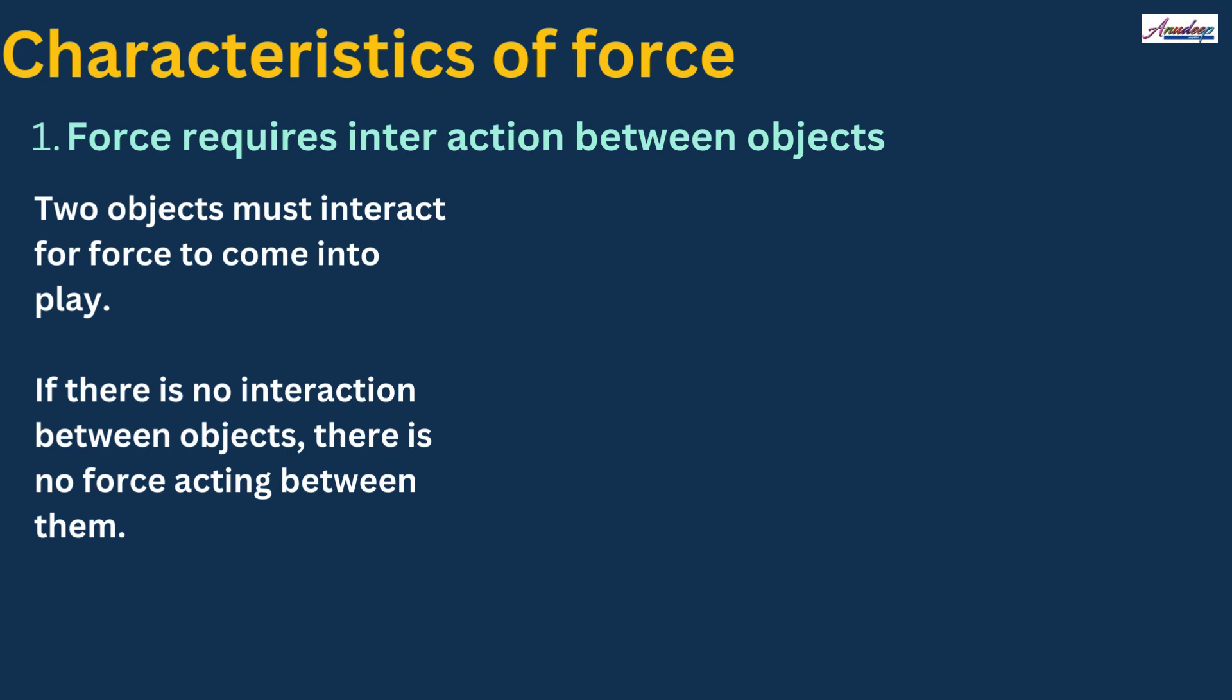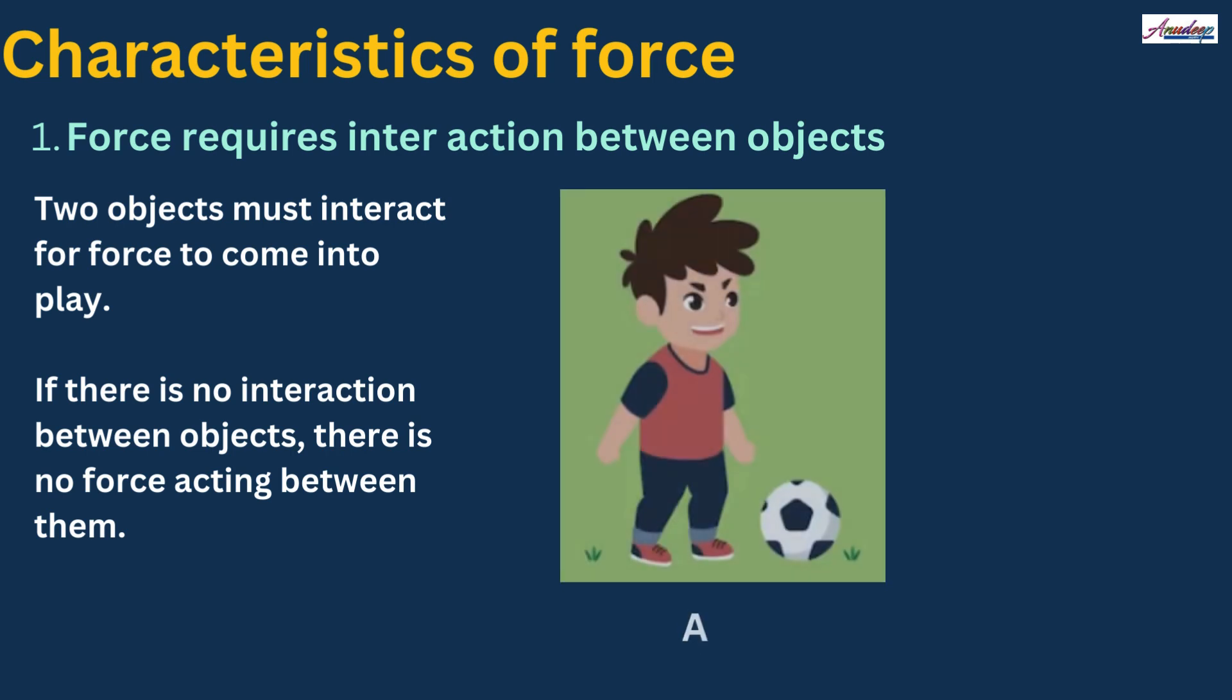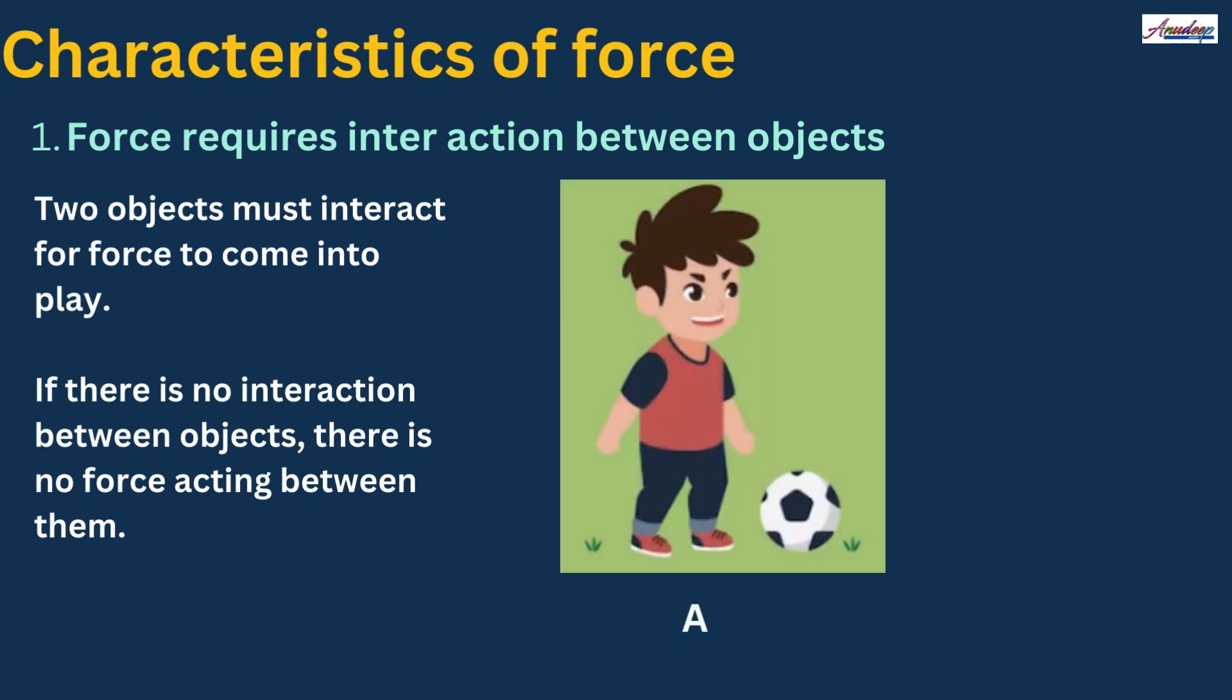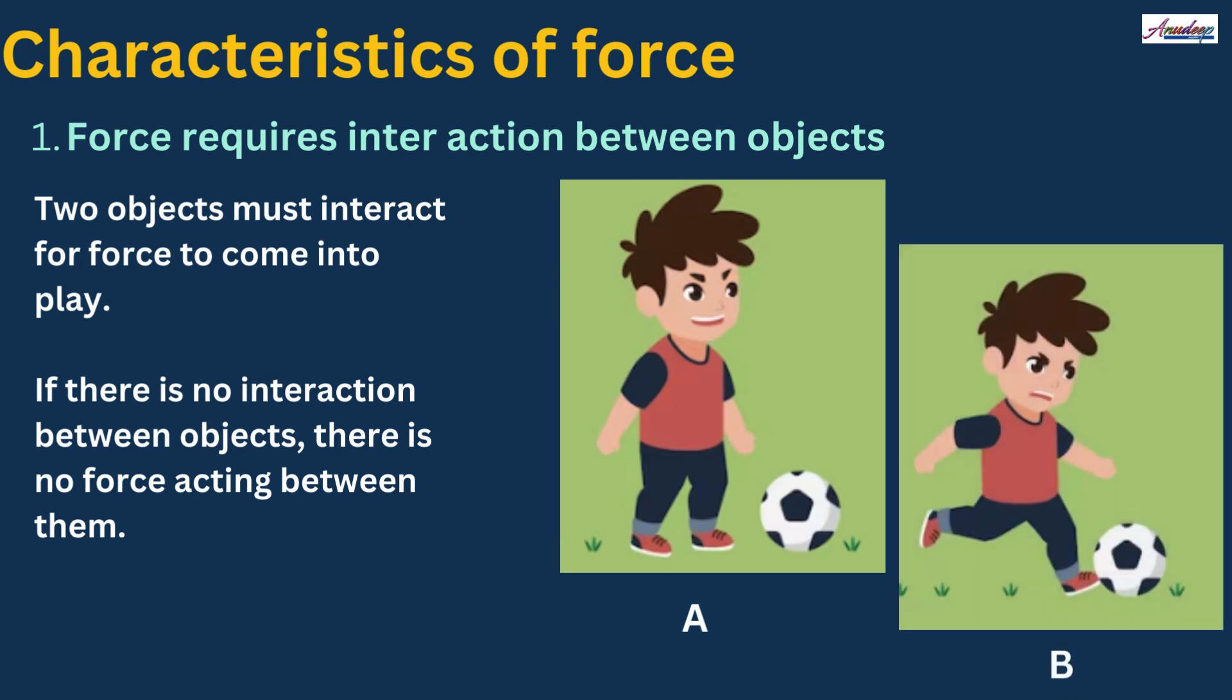First, force requires interaction between objects. For example, if we see in figure A, if football player is standing near the football, he cannot move the ball. But when the football player kicks the football, it means there is interaction between football player and ball, then only the ball can move. So it proves that force requires interaction between objects.